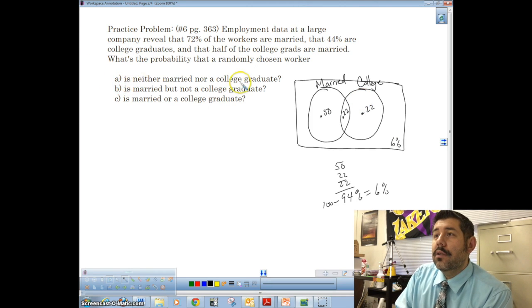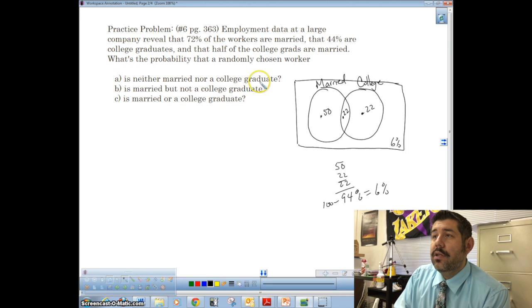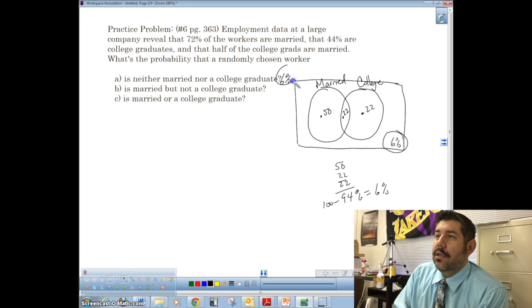So that means 6% are not in any of those categories. So, how many, so what's probably the random chosen workers, neither married nor a college graduate? We just figured that out, right? We just did that. So 6%.